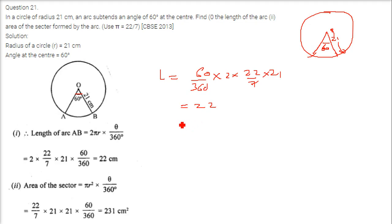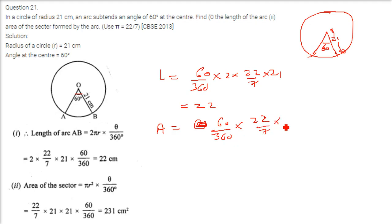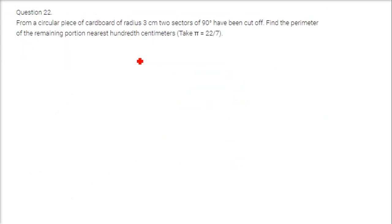Then we find the area of the sector. Using the formula: area = (θ/360) × πr², we substitute 60/360 × (22/7) × 21 × 21, which gives 231 cm². The arc length is in cm and the sector area is in cm².